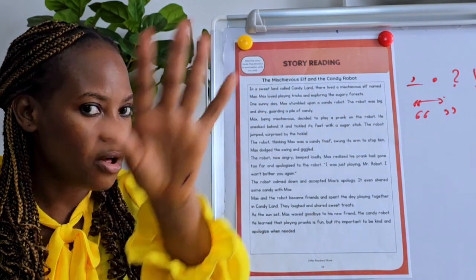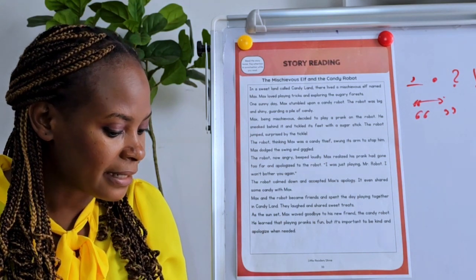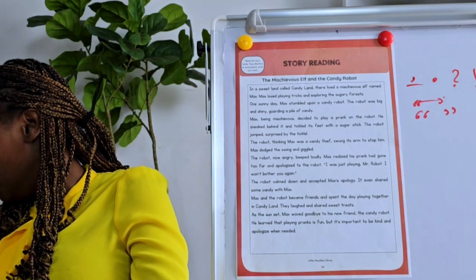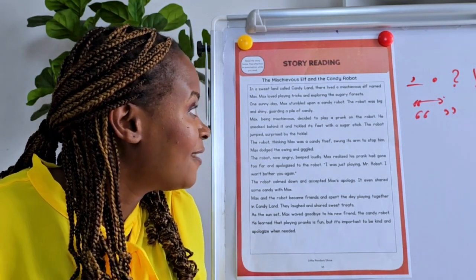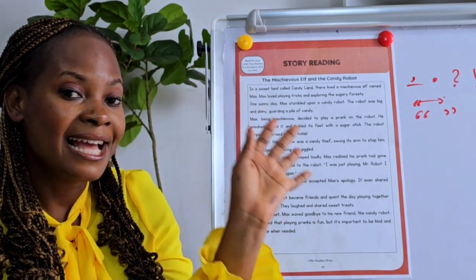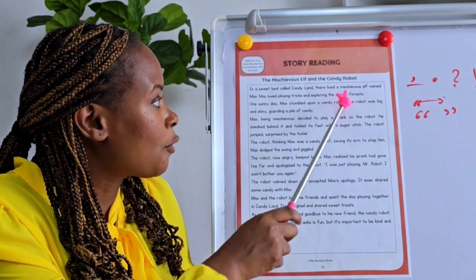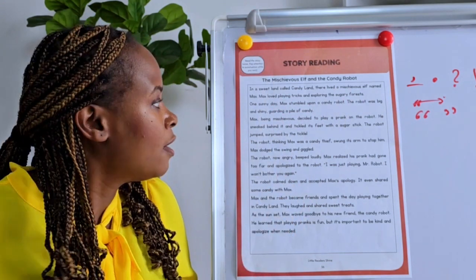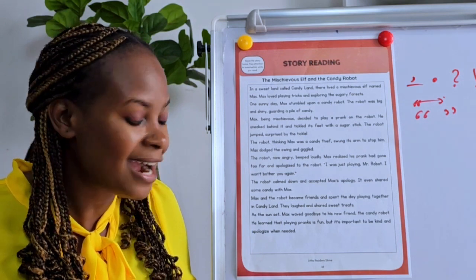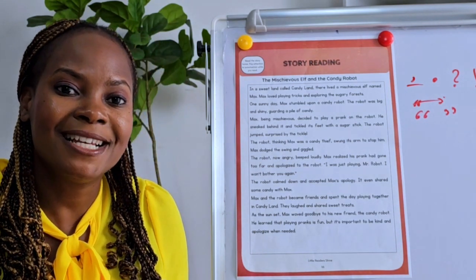All right, what should I have in my picture? We are going to have Candyland — we will see lots of sweets in that setting. We must see an elf. What else? We have to see a robot in the picture, isn't it? Okay, drum roll please!